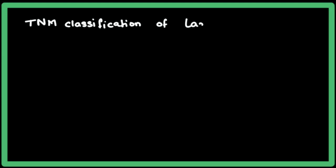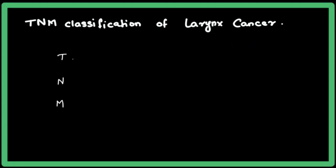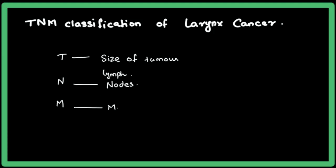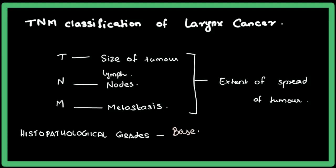The TNM classification of laryngeal cancer as given by AJCC 2002, that is the American Joint Committee on Cancer. TNM stands for T — the size or extent of the tumor; N — the lymph nodes involved; M — whether metastasis is present. This determines the extent and spread of the tumor. Another part of this classification is histopathological grading, based on the differentiation of the cells.